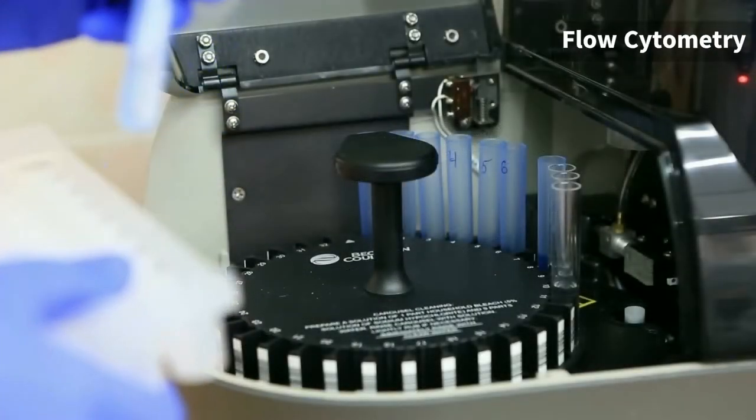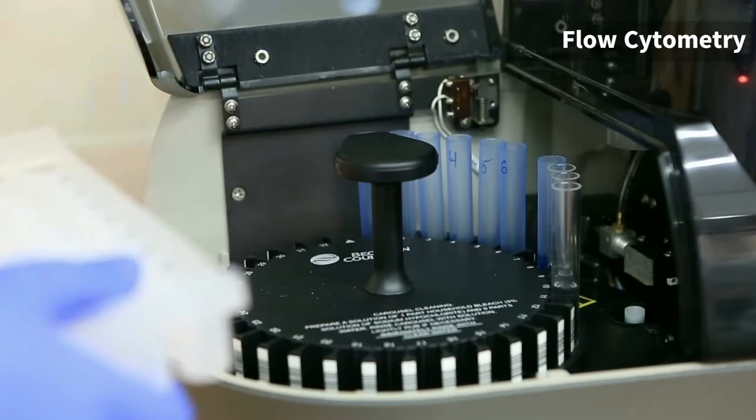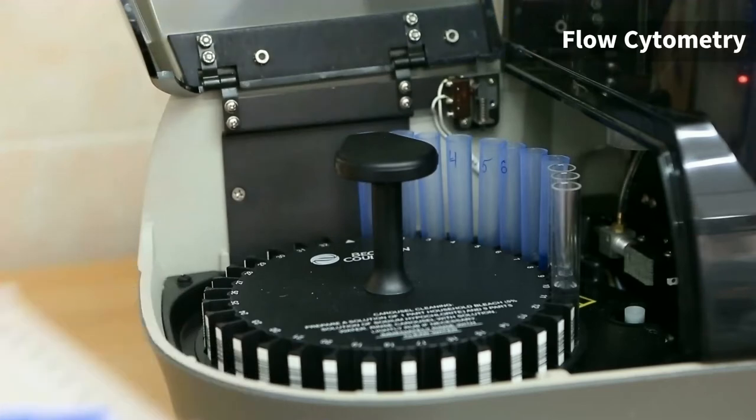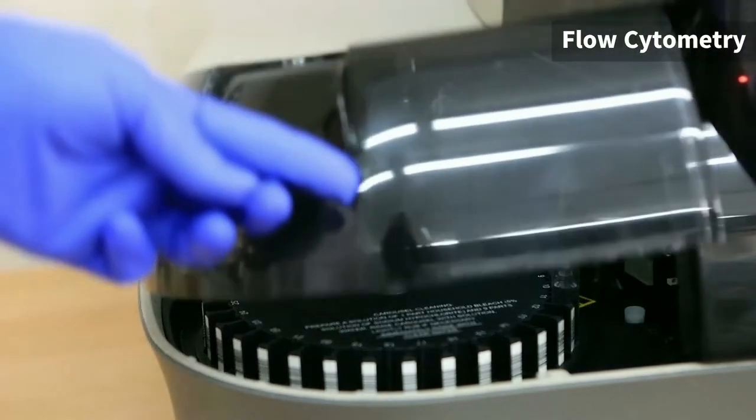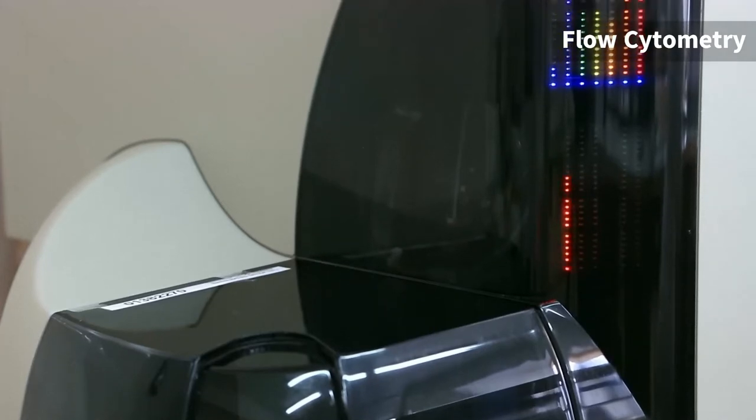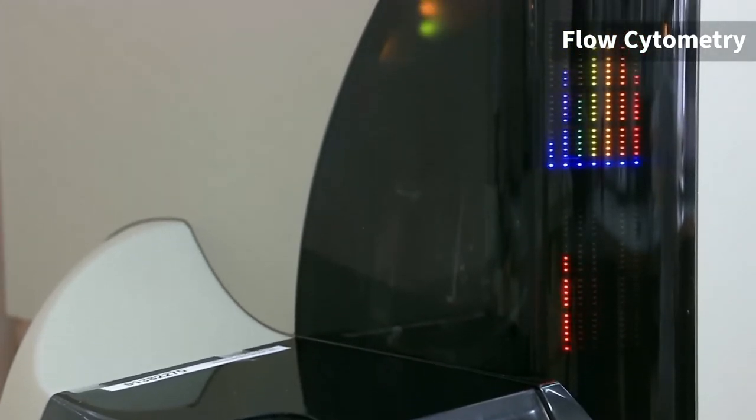Flow cytometry is used to examine the physical and chemical properties of cells and microparticles. Cells are typically suspended in a fluidic stream, passing by a detector to reveal cellular information such as size, shape, and other detailed characteristics. Specialized cytometers can sort or even image the cells for further analysis.